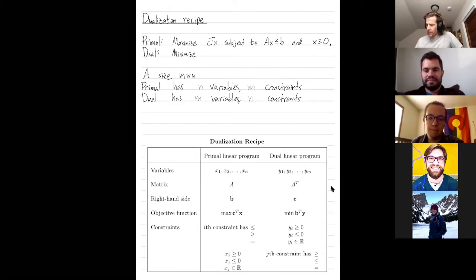So together we derived the dual of a particular type of linear programming problem. If we have a linear programming problem where these constraints are less than or equal to constraints and we have non-negativity on all variables,